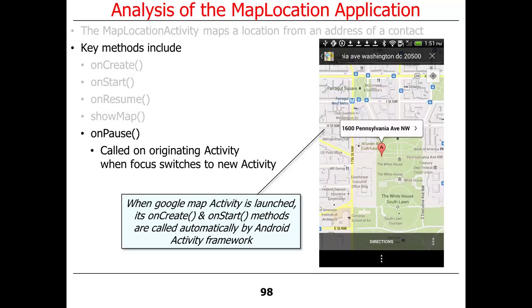A student asks whether onStart in the new activity waits until onPause completes. The onPause in the originating activity should be called before the new activity is up and running, but it doesn't really matter because the new activity blocks the old one anyway — focus has changed. Android by and large does not have overlapping windows; when you start a new activity it typically takes up everything and blocks the one already there. There are ways to bring up partial windows, but that's not the norm.